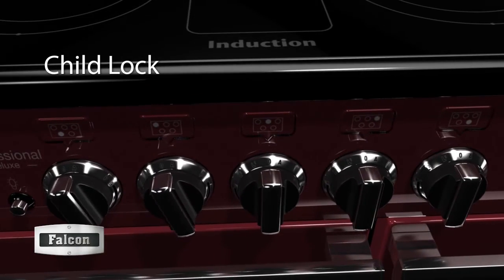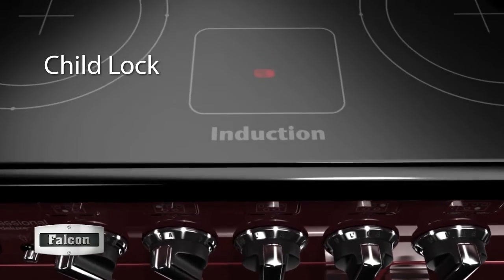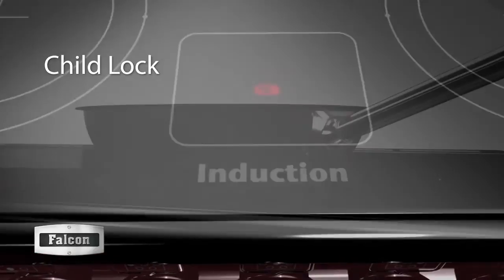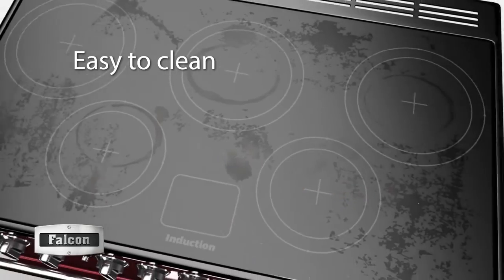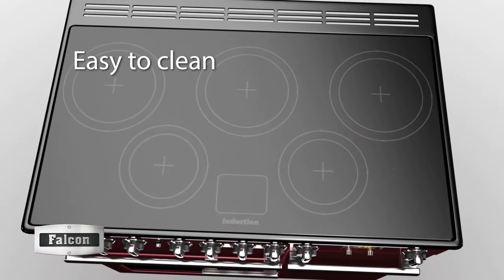The child lock prevents the hob from being accidentally turned on. Food will not burn onto the glass. Spillages can be easily cleaned with a damp cloth or a small dab of cleaning cream.